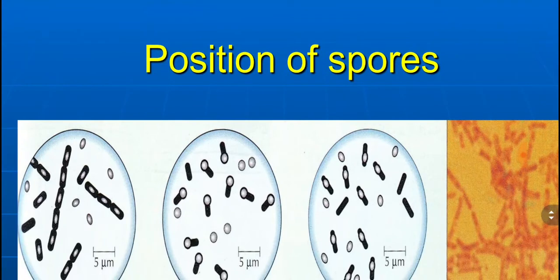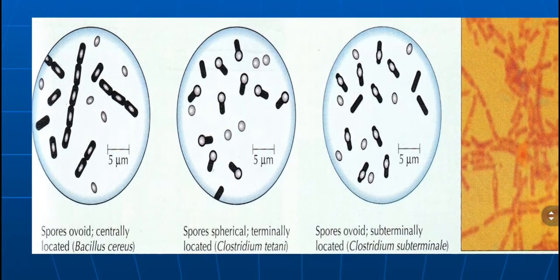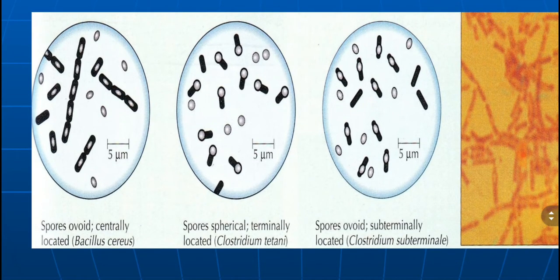Regarding the position of spores: the first type is central, as seen in Bacillus cereus and Clostridium bifermentans. The second is terminal and round, as in Clostridium tetani. The third is sub-terminal, as in ovoid spores. Remember, most Clostridium species have sub-terminal spores.